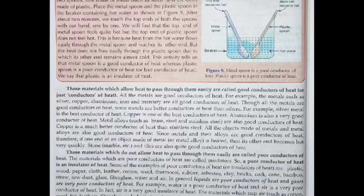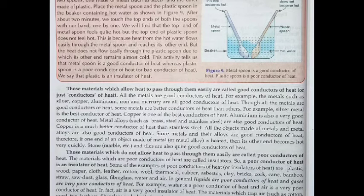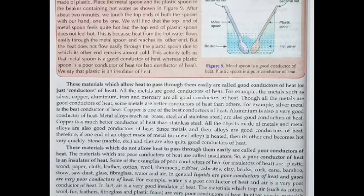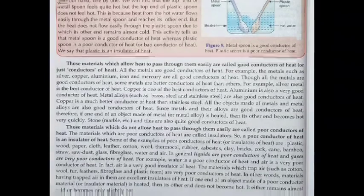Examples of good conductors include silver, copper, iron, and mercury — all metals are good conductors. Examples of poor conductors or insulators include wood, paper, cloth, and leather — these are all poor conductors of heat.